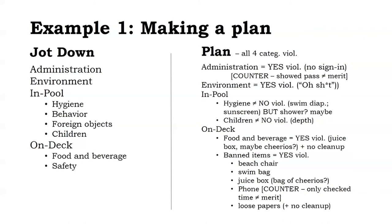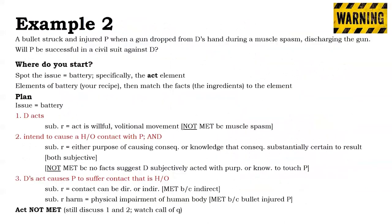We've covered the administration issue — there's a violation, we provided the facts, and addressed the counter argument that doesn't have merit. We check that off and continue through the plan. Let's move on to a different example.